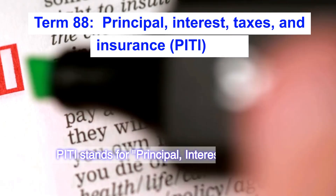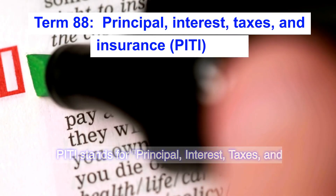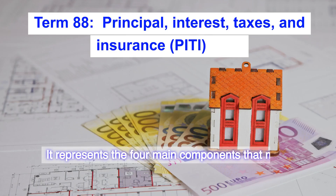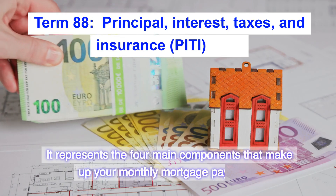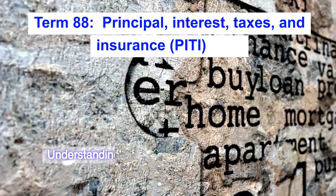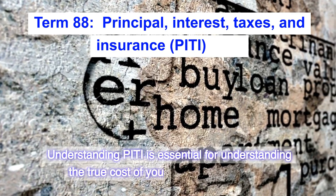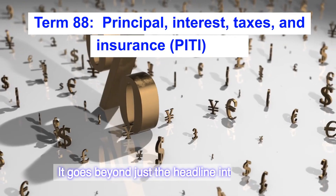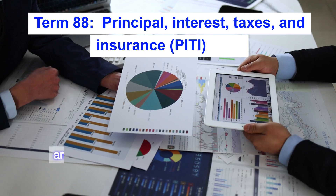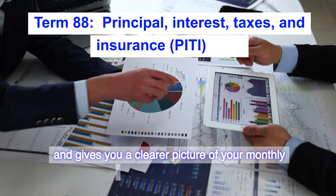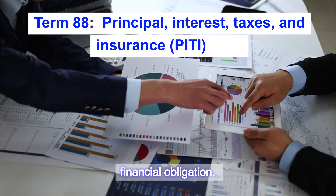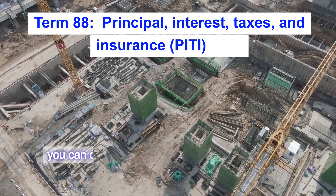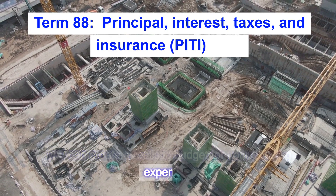PITI stands for Principal, Interest, Taxes, and Insurance. It represents the four main components that make up your monthly mortgage payment. Understanding PITI is essential for understanding the true cost of your mortgage payment. It goes beyond just the headline interest rate and gives you a clearer picture of your monthly financial obligation. By factoring in the total PITI payment, you can create a realistic budget for your housing expenses.